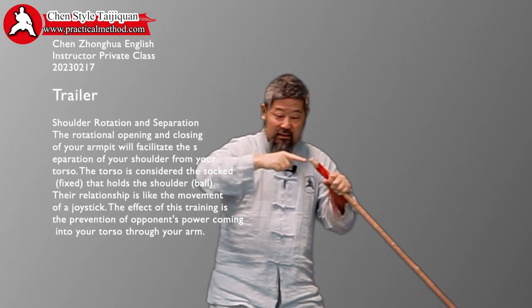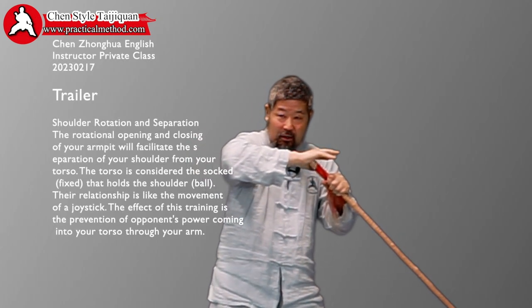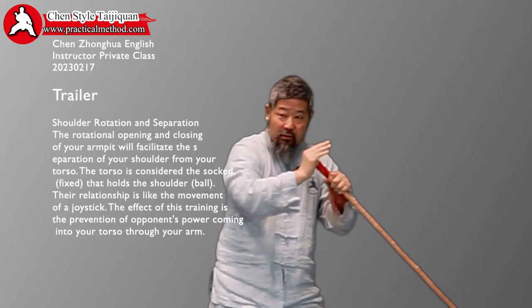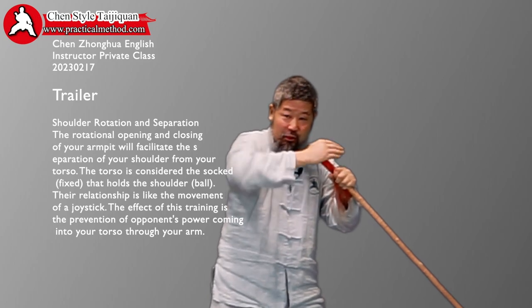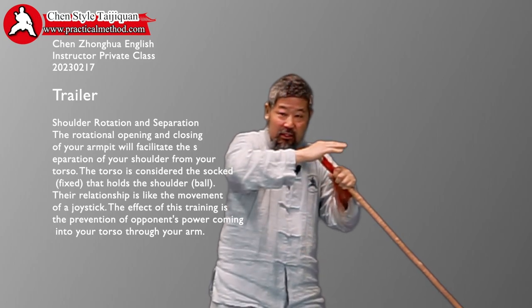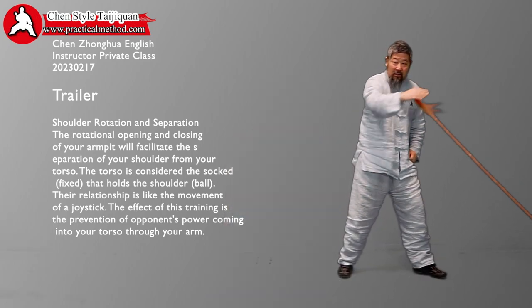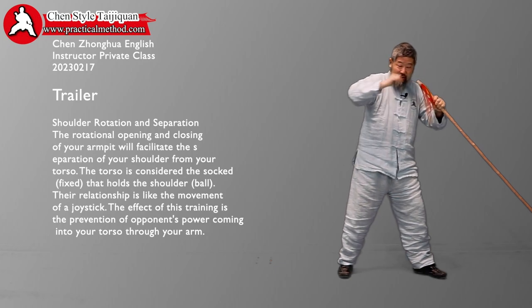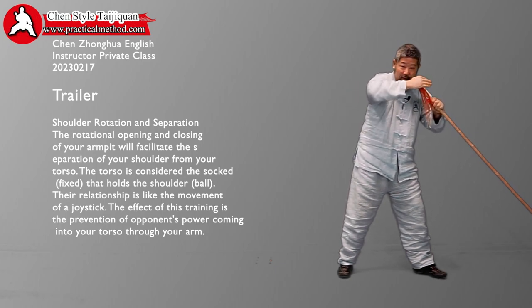This is your arm. This is the armpit — that ball. Your arm moves, your shoulder moves like this, but there is no motion in it. You cannot do this. It's your shoulder rotating on this ball.